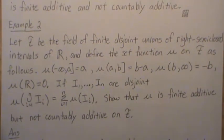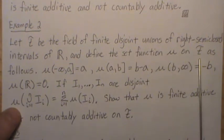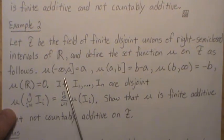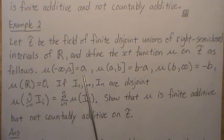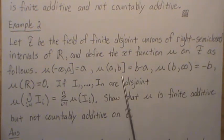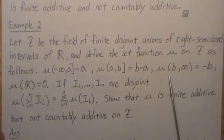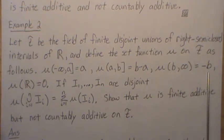Example 2: let F be the field of finite disjoint unions of right semi-closed intervals of ℝ, and define the set function μ on F as follows. If it's this right semi-closed interval [a, b), then the set function is b - a. If the interval is [b, ∞), then the set function is -b.